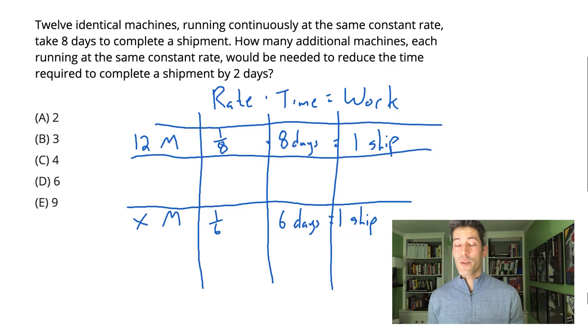Now, the hidden step to these rate problems is going to be to solve the rate for a single machine. A single machine will work slower than 12 machines. Logically, that makes sense. But one way we want to think about this is in terms of scale. 12 machines have a rate of one-eighth. Six machines, so half the number of machines, should have a rate of half of an eighth or a sixteenth.